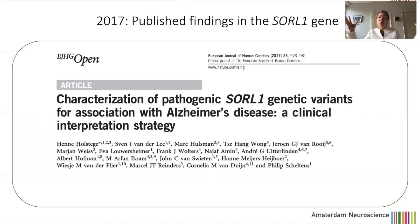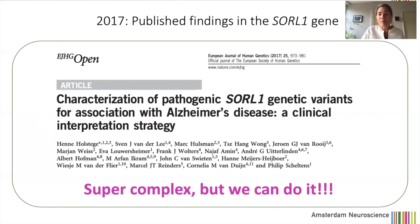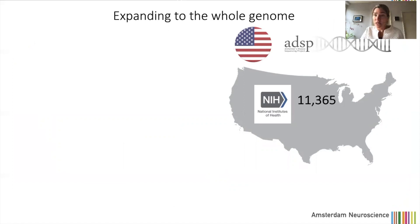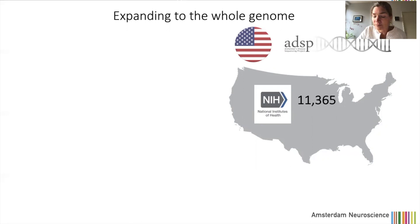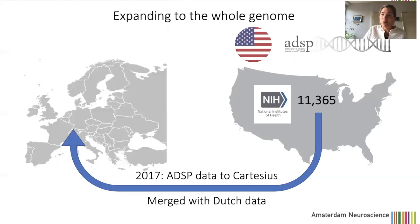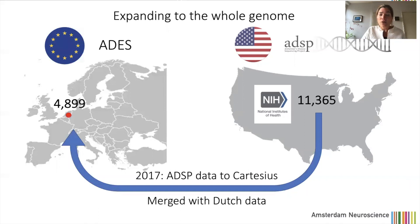We wanted to expand beyond one small piece of the DNA to the whole genome, and for that we needed many more genomes. We were aware that in the United States, similar efforts were taking place and that researchers there had collected over 11,000 genomes funded by the NIH, which requires data to be made available within three months. We requested and got approved for that data, downloaded it all, and merged it with our data in Amsterdam — by that time almost 5,000 genomes — giving us a very large dataset.